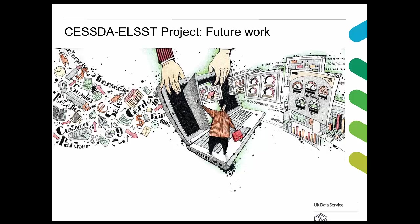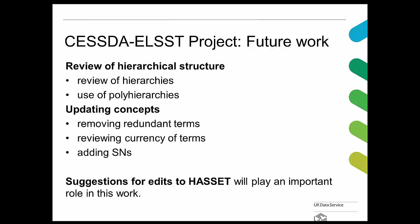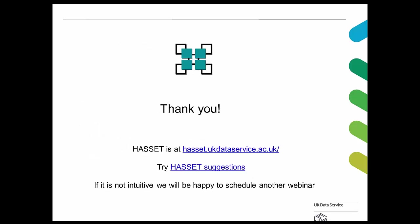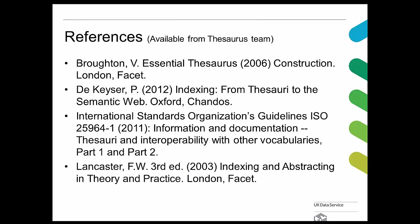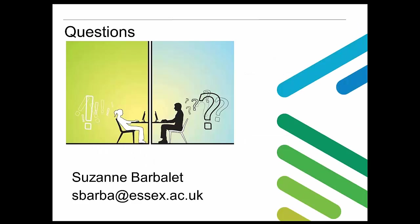Just a quick comment about future work. What we're aiming to do for the remainder of the project is to review hierarchical structure and review the use of polyhierarchies, remove redundant terms, review currency of terms, and review our scope notes. Suggestions for edits to HACET will play an important role in this work. Thank you all — the new HACET can be found at the URL provided. We'll invite you now to try HACET suggestions, and if it's not intuitive, we'll be happy to schedule another webinar. These are some references referred to in the slides, and I'm now open for any questions.